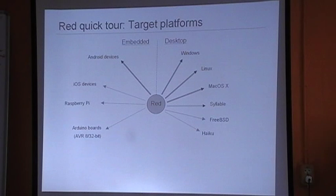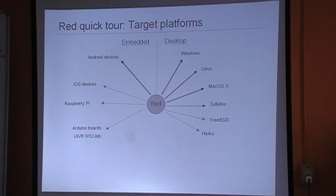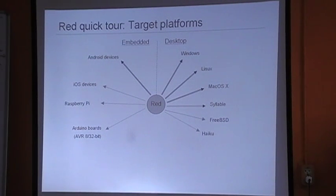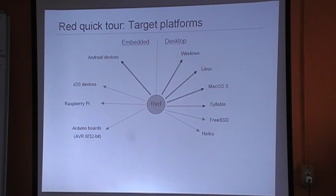It seems Arduino boards are more developed to be a building block, while the Raspberry Pi is more of a small computer system. The Raspberry Pi does have general-purpose I/O connections available — which is also the main purpose of Arduino boards — to connect anything. Raspberry Pi could easily replace Arduino boards on many applications and usages. FPGAs could also be added as a possible target.